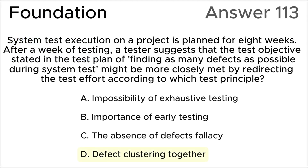The correct answer is D. According to testing principle 4 in the ISTQB syllabus, this principle suggests that defects tend to cluster together in specific areas or modules. If after a week of testing the tester observes a concentration of defects in certain components or modules, redirecting the test effort to focus more on those areas is in line with the principle of defect clustering.